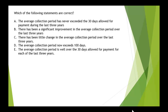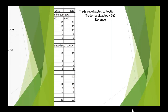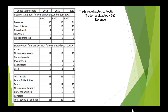Now let's look at another series of statements. The average collection period: has it exceeded 30 days over the last three years? Has there been improvement in the average collection period? Has there been little change? Does it now exceed 100 days? Is it over the 30 days allowed for payments for each of the last three years? These all relate to collections and receivables, so we need to calculate the trade receivables collection period: trade receivables multiplied by 365 over revenue.